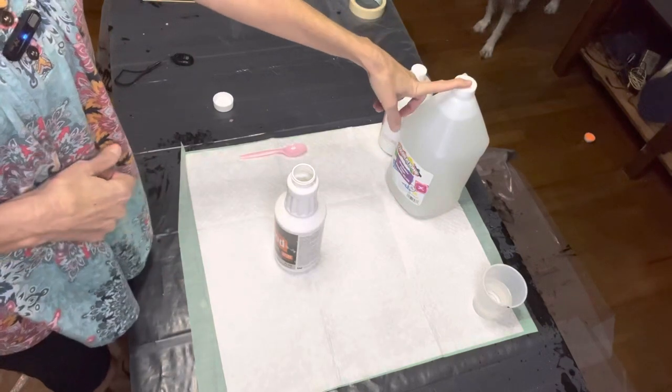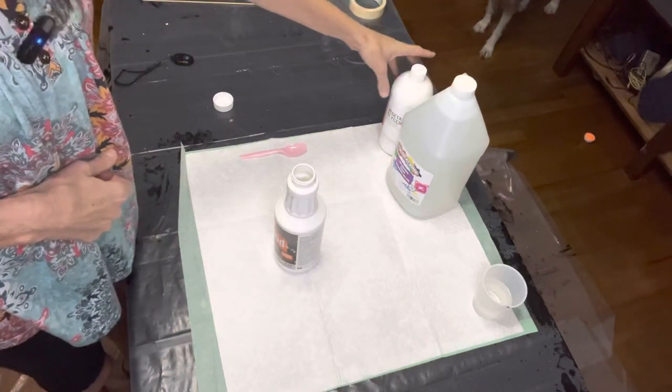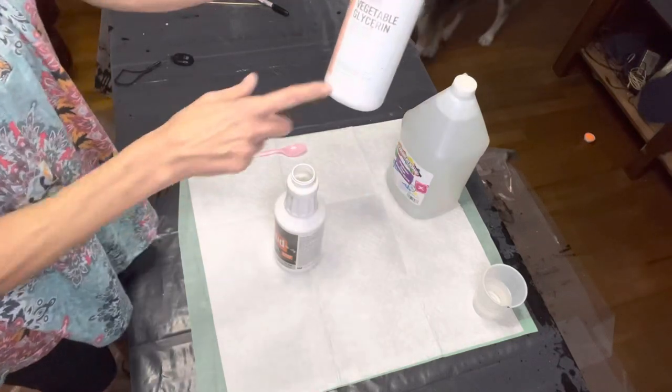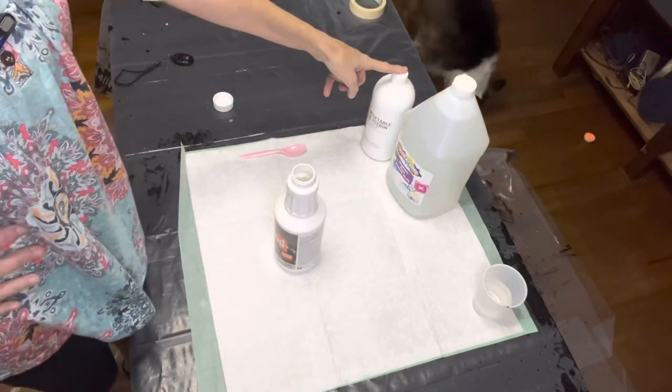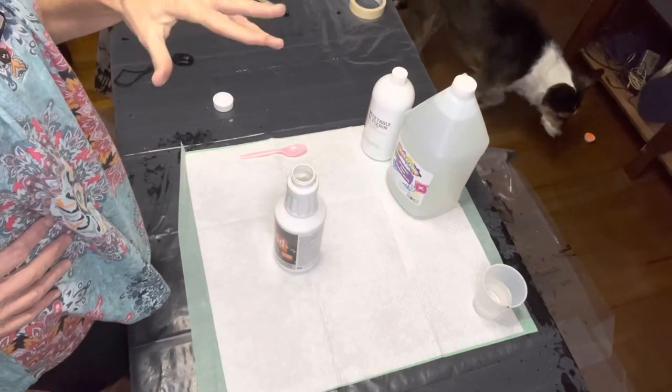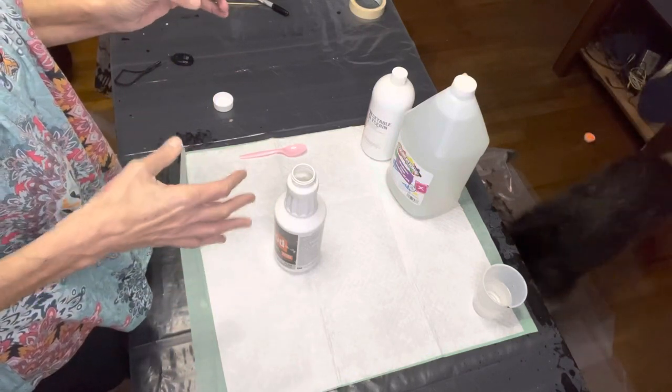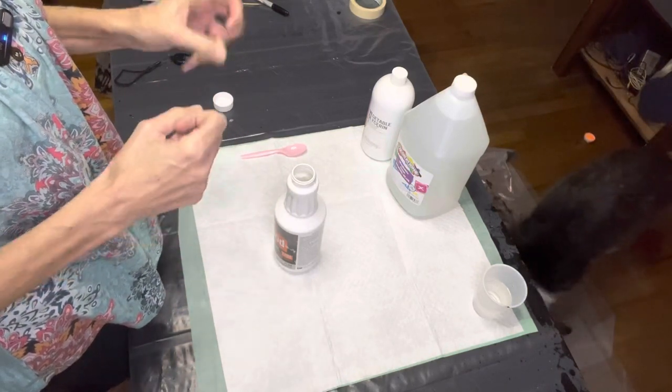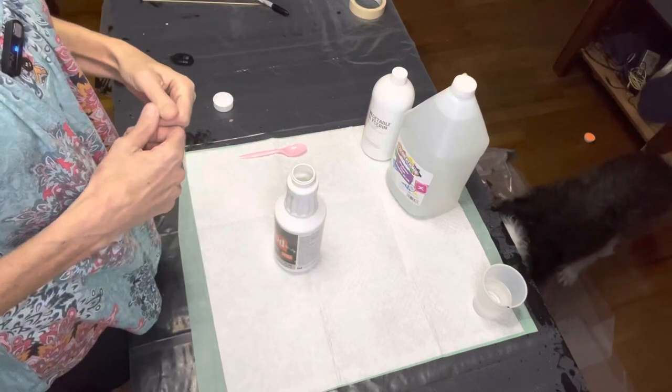But you'll need some type of PVA glue and then vegetable glycerin. And what the glycerin does is it helps the paint to move better, but it also keeps your paints from cracking. This is what I've heard, so we're going to give it a try.